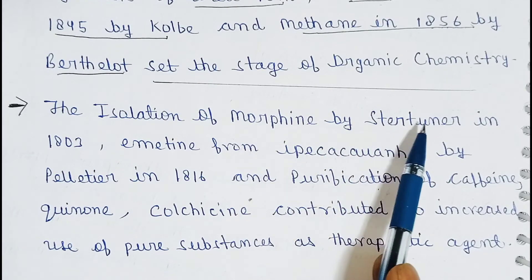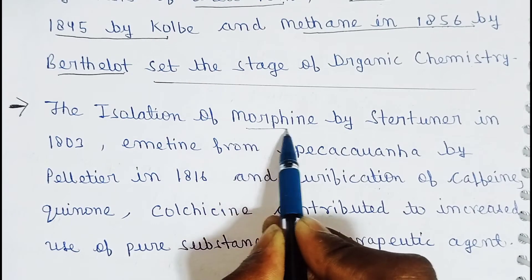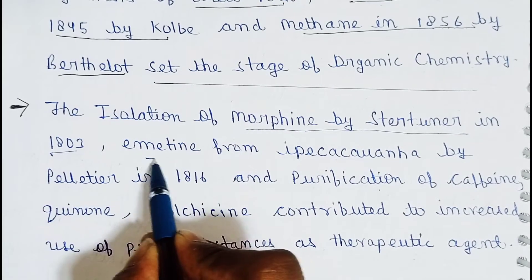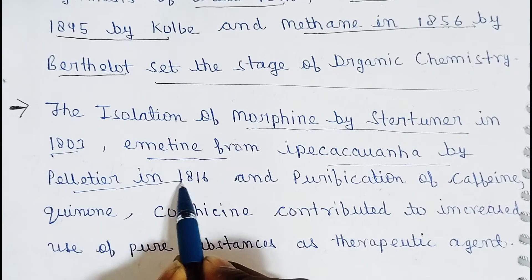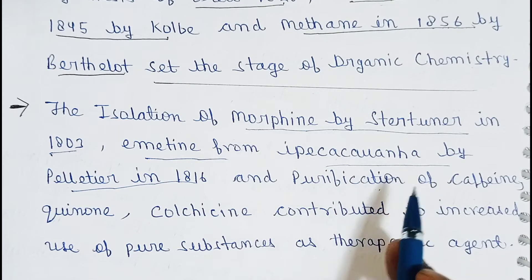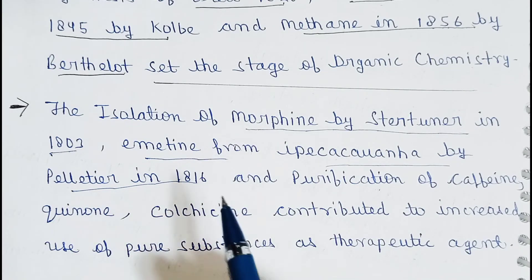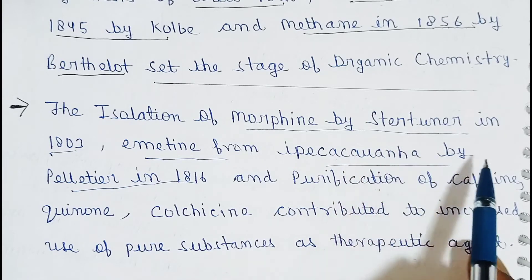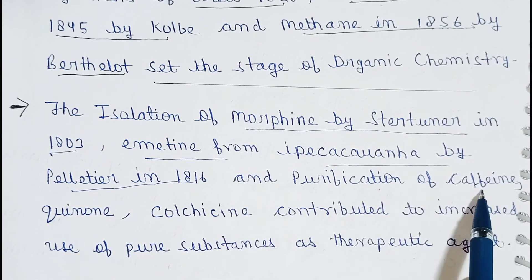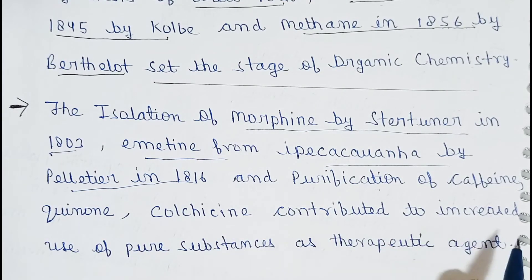The isolation of morphine by Sertürner in 1803, emetine from ipecacuanha by Pelletier in 1860, and the purification of caffeine, quinine, and colchicine contributed to the increased use of pure substances as therapeutic agents. इससे साबित होता है कि 19th century में organic chemistry का नया रूप शुरू हुआ — morphine, emetine, colchicine का isolation हुआ, और इन substances को therapeutic agents के रूप में diseases को cure करने के लिए प्रयोग किया गया।